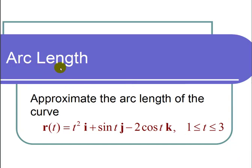This is a video on arc length. The question states, approximate the arc length of the curve defined by the vector valued function R of t is equal to t squared i plus sine of tj minus 2 cosine of tk